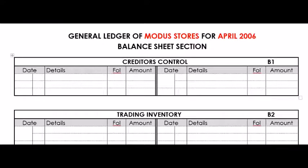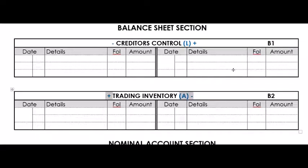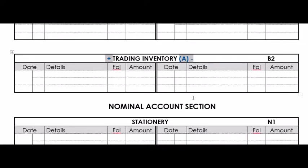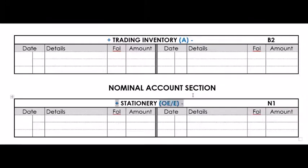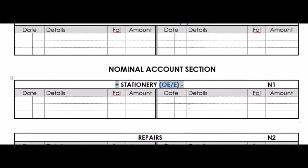Before posting the Creditors Journal to the general ledger, go through every account, classify it in brackets next to the account name, and make plus and minus signs based on DEAD and CLIC. Creditors Control is a liability account — liabilities increase on the credit side because the L is the L of CLIC. Trading inventory is an asset — the A of DEAD — so assets increase on the debit side and decrease on the credit side. Stationery is an expense account — the E of DEAD — so it increases on the debit side, and the same applies to repairs.